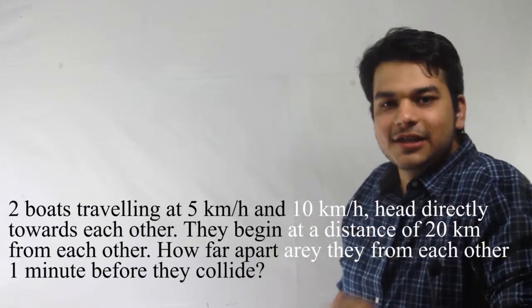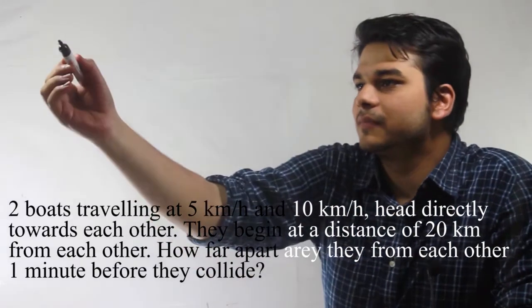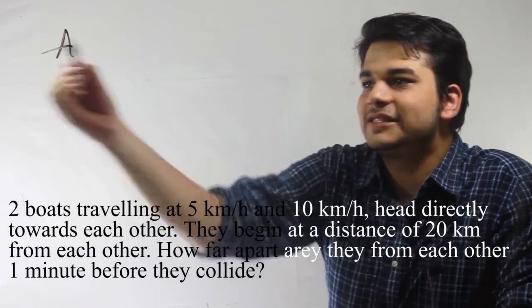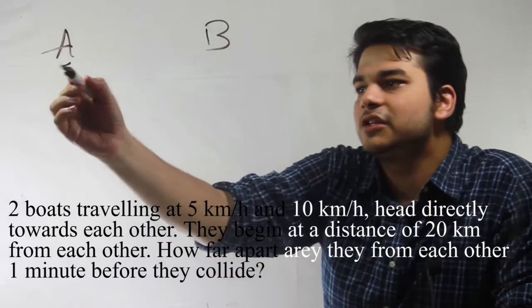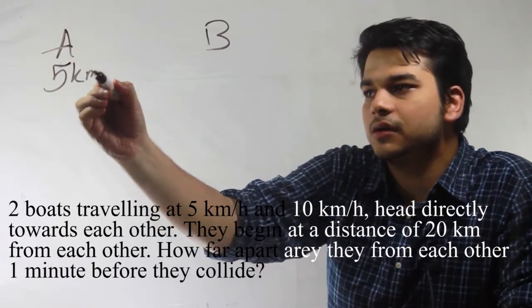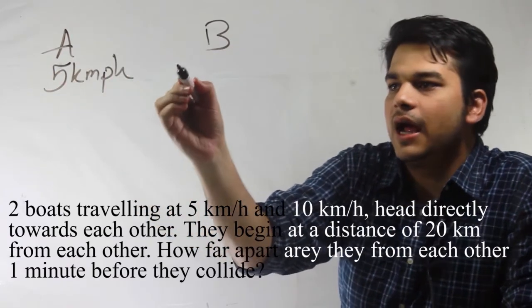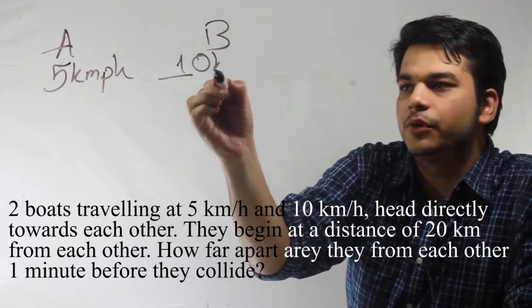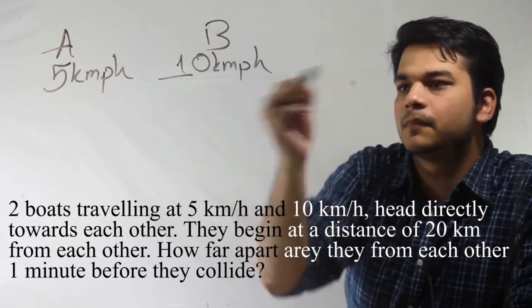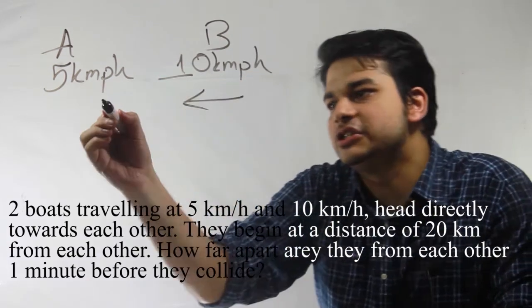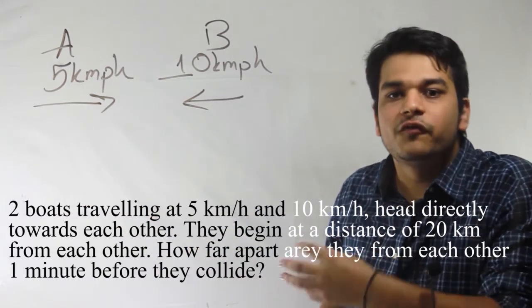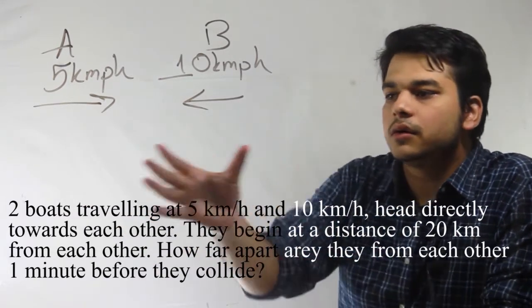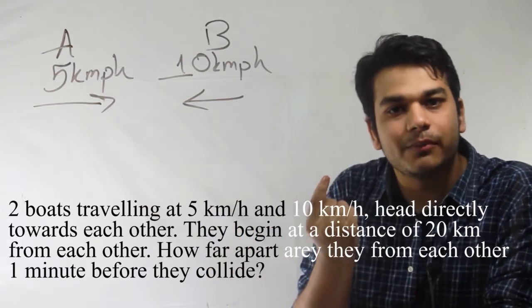Hello friends, in this problem we have been given that there are two boats, let's say A and B. One of them travels with a speed of 5 km per hour and the other at 10 km per hour, and they move towards each other. We have been asked to find out the distance between them just one minute before they actually collide.